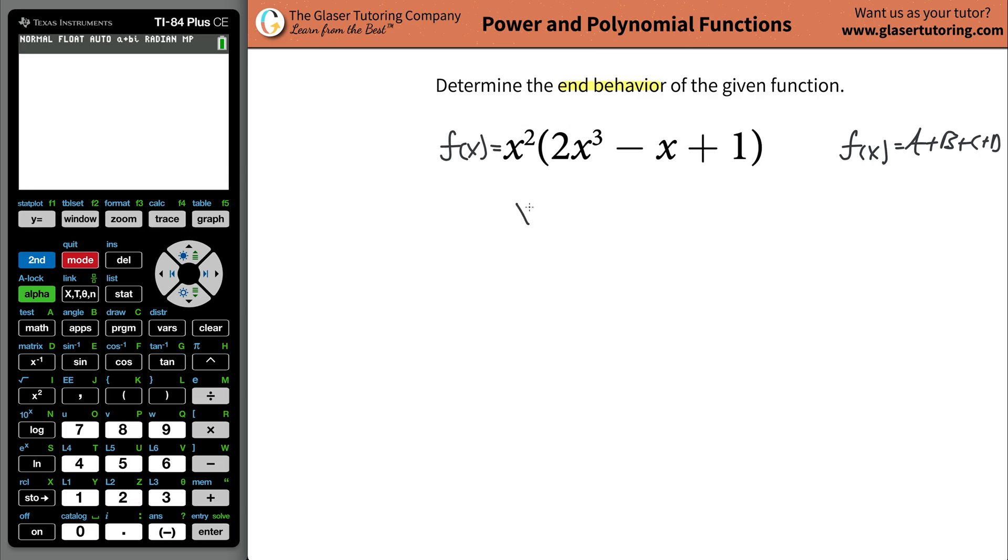So x squared times 2x cubed is going to be 2x raised to the fifth. Then x squared times negative x is going to be negative x cubed, and then x squared times positive one is going to be a positive x squared.